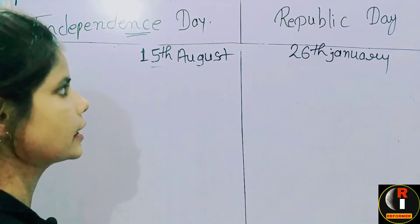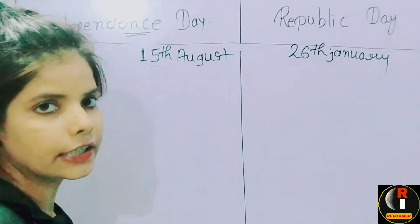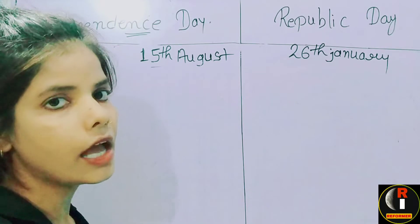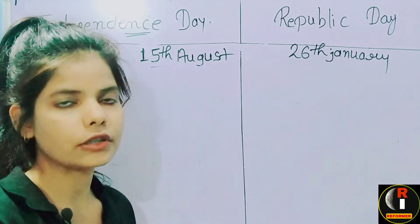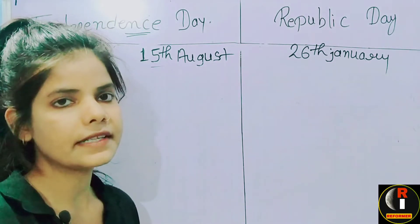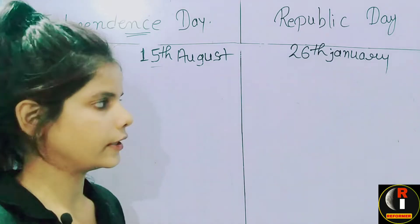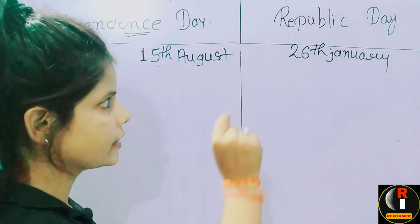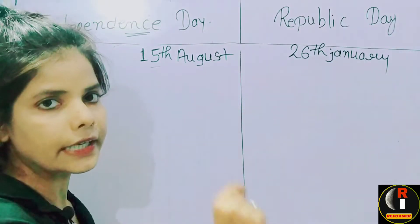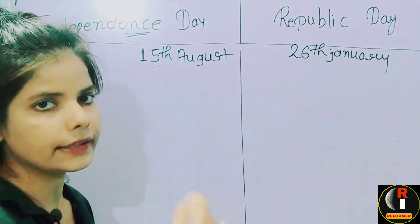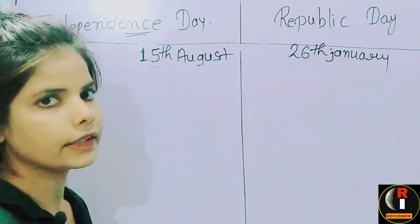15th of August we call Independence Day, and in Hindi we also call it Swatantrata Divas or Swadhinata Divas. 26th of January we call Republic Day, and in Hindi we call it Ganah Tantra Divas.